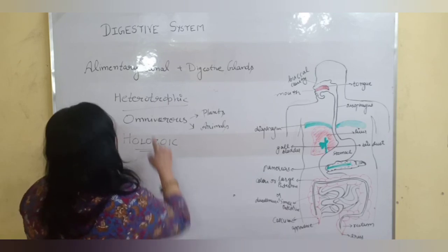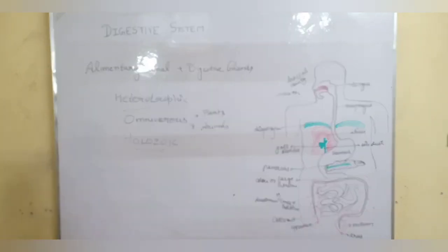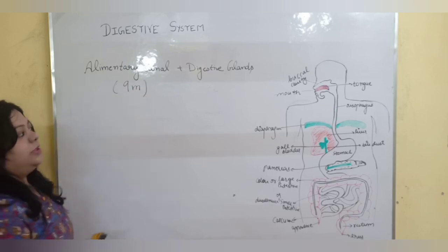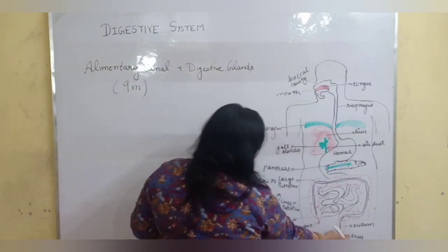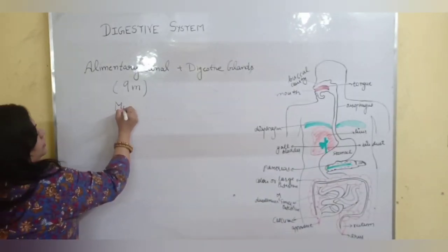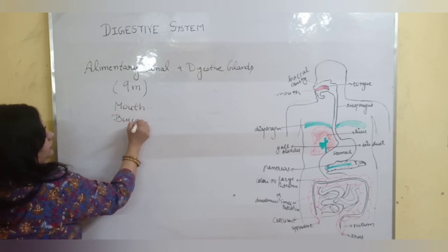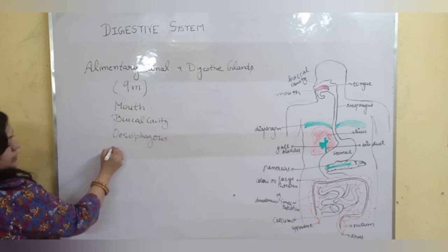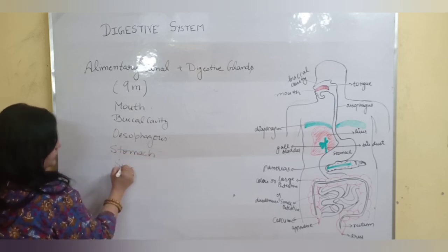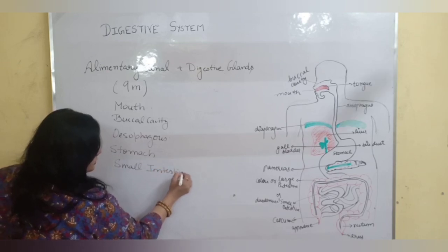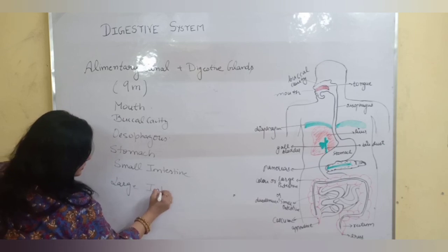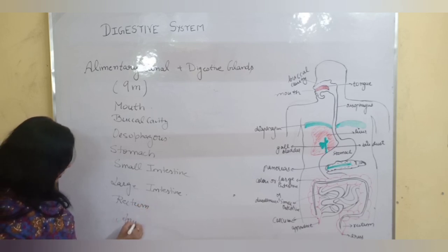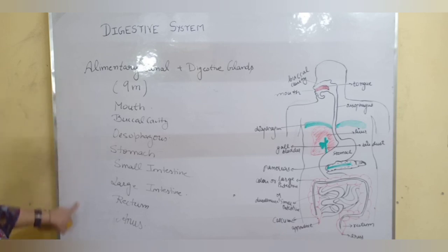The digestive system in human beings consists of the alimentary canal and digestive glands. The alimentary canal is basically 9 meters in length, starting from the mouth and ending with the anus. The main parts are: mouth, buccal cavity, oesophagus, small intestine, large intestine, rectum, and anus. All these are parts of the alimentary canal.